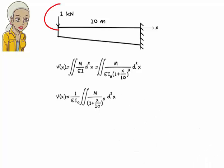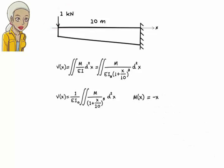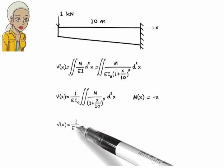Given that we have a downward concentrated load of 1 kN applied at the free end of the beam, the bending moment equation can be written as M(x) equals negative x. Therefore, the deflection equation becomes...